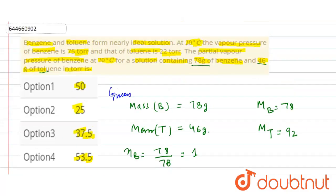So here in the question, we have given that we need to find the partial vapor pressure of benzene at 20 degrees Celsius for the solution.